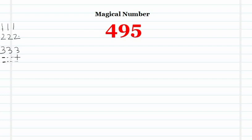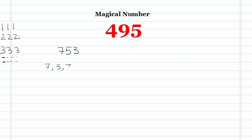So how do we obtain 495? Consider any number — for example, I am taking 753. In this number, all three digits are different. In Step 1, we form the largest and smallest numbers from those digits. The digits present here are 7, 5, and 3.